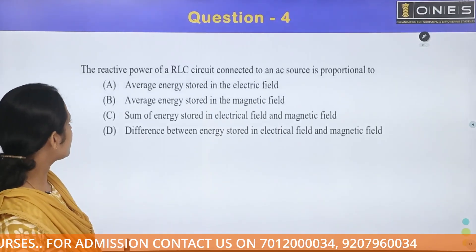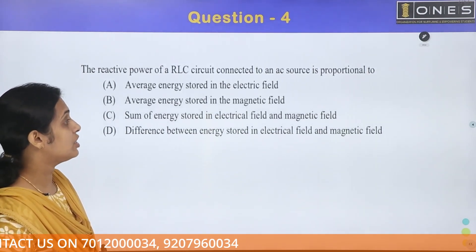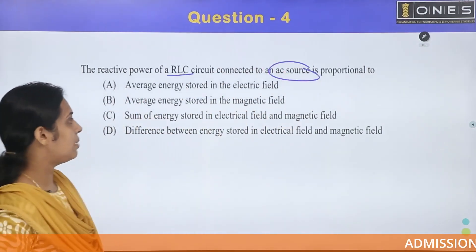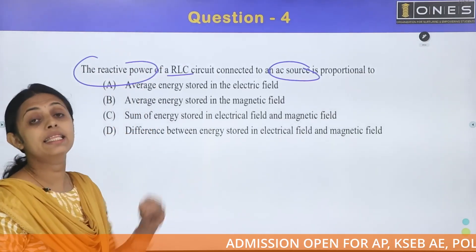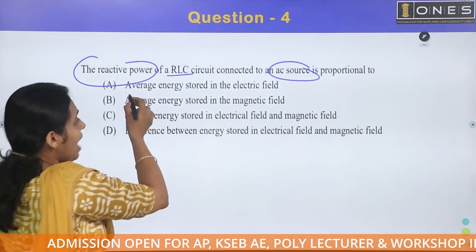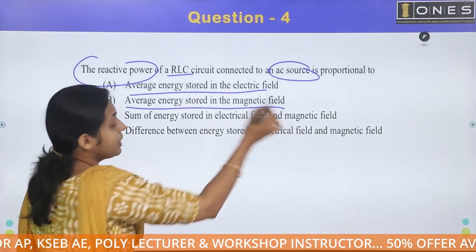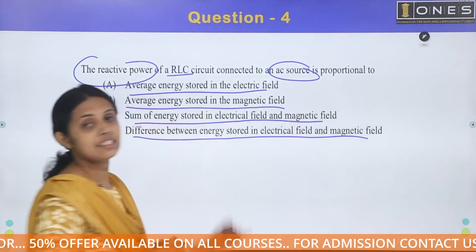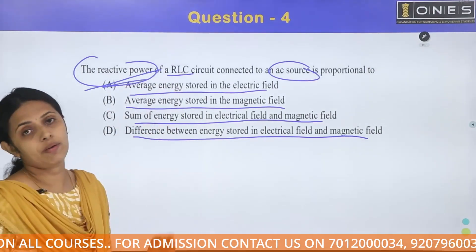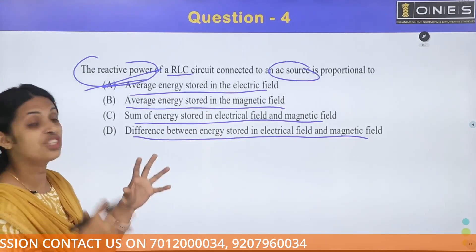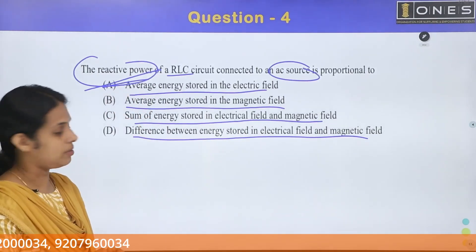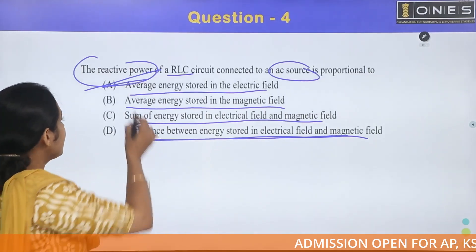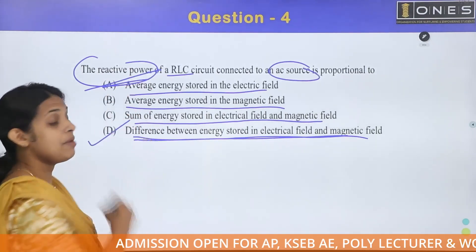Next question. The reactive power of an RLC circuit connected to an AC source is proportional to which of the following: average energy stored in the electric field, in the magnetic field, sum of both, or difference between the two? The correct answer is Option D — the reactive power is proportional to the difference between energy stored in the electric field and the magnetic field.